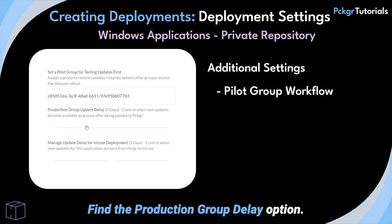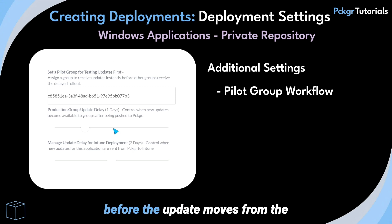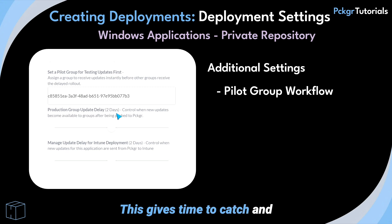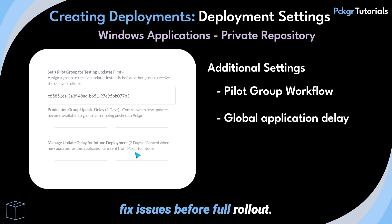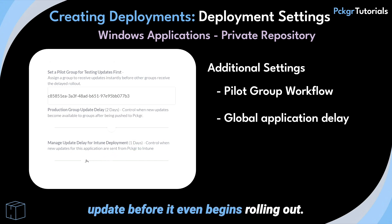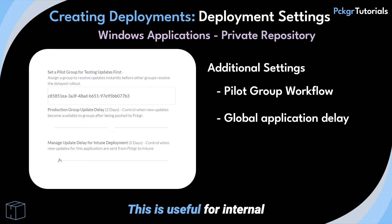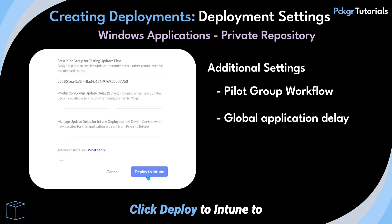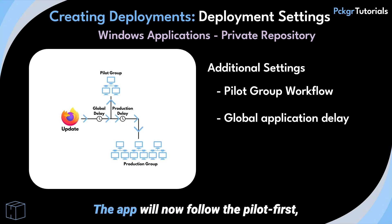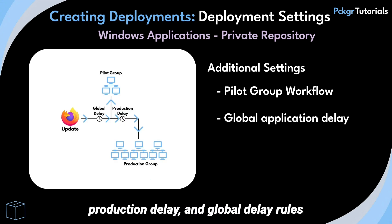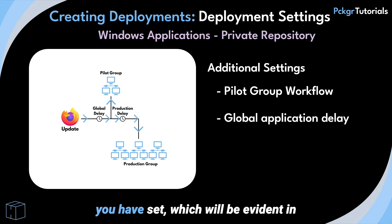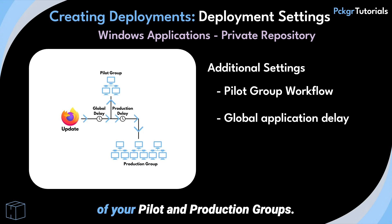Find the Production Group Delay option. Set the number of days to wait before the update moves from the Pilot Group to all production users. This gives time to catch and fix issues before full rollout. Locate the Global Delay setting and set the number of days to pause the update before it even begins rolling out. This is useful for internal testing or avoiding disruptions during critical periods. Click Deploy to Intune to start the staged rollout. The app will now follow the Pilot First, Production Delay, and Global Delay rules you have set, which will be evident in Intune under the Availability status of your Pilot and Production groups.